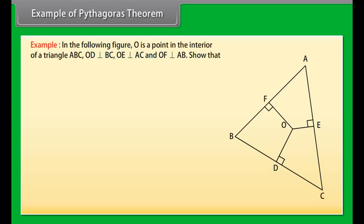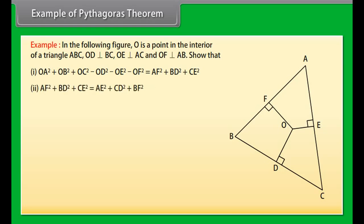Example: In the following figure, O is a point in the interior of triangle ABC. OD is perpendicular to BC, OE is perpendicular to AC, and OF is perpendicular to AB. Show that: (1) OA² plus OB² plus OC² minus OD² minus OE² minus OF² equals AF² plus BD² plus CE², and (2) AF² plus BD² plus CE² equals AE² plus CD² plus BF².